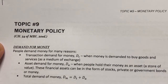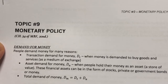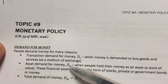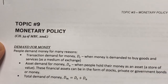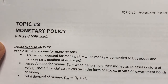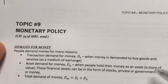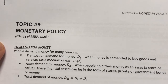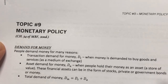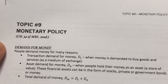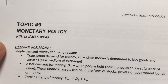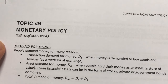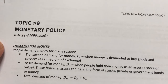Another reason why people demand for money is called the asset demand for money, or DA. This happens when people hold their money as an asset. This particular reason is associated with the second function of money, which is as a store of value. These financial assets can be in the form of stocks or private and government bonds, as well as money itself.